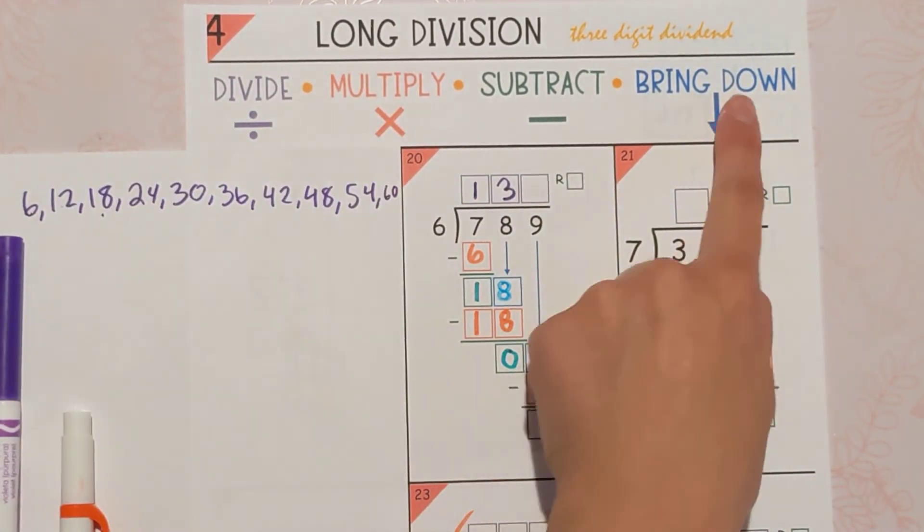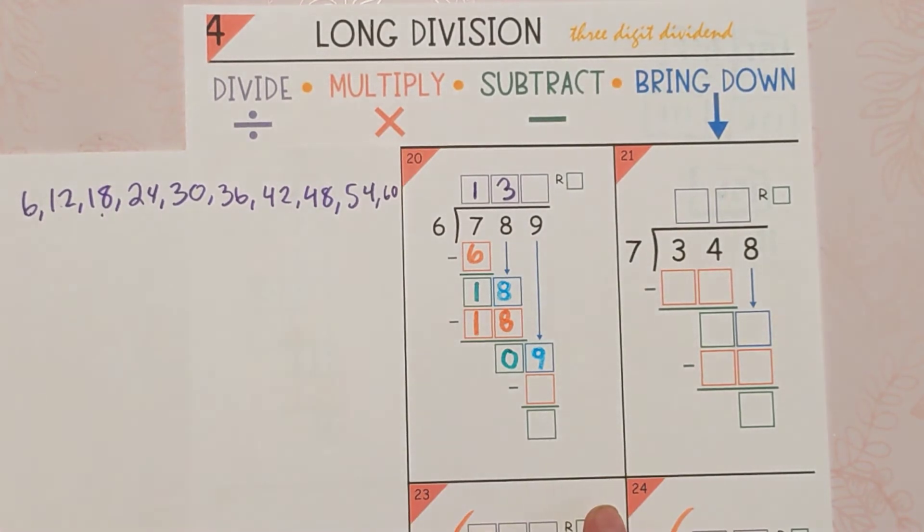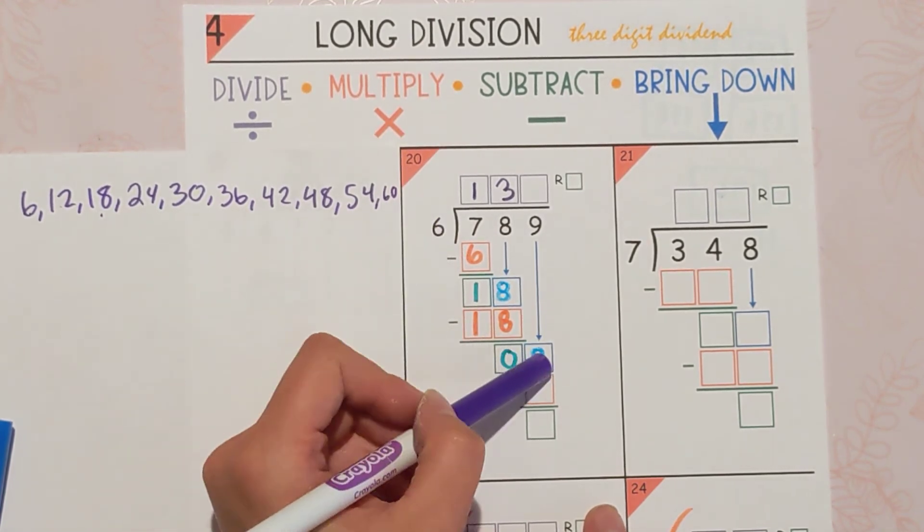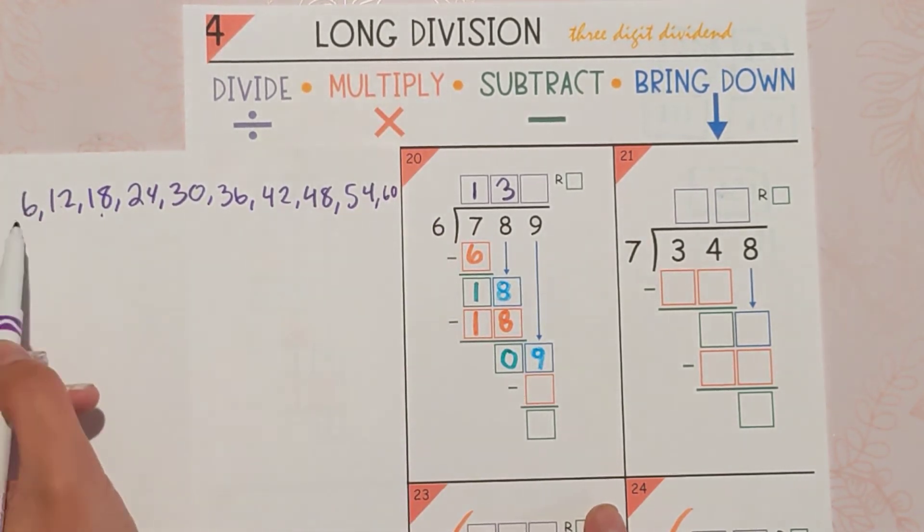Okay, now we're ready to divide again. Think about what we're dividing here. We're dividing 9 by 6. In other words, how many 6's can fit into 9 without going over?